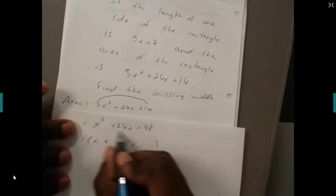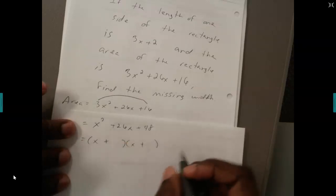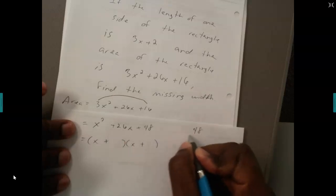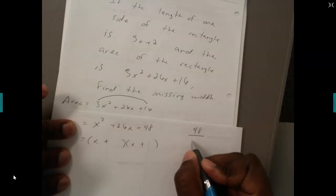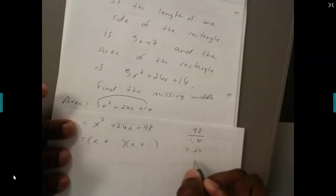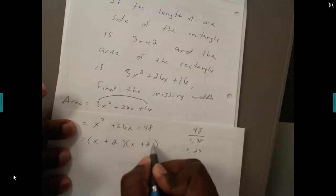I've got to figure out numbers that multiply to be 48 but add to be 26. You've got 1 and 48, 2 and 24, and actually I see the pair 2 and 24 can add up to 26, so we'll put 2 and then 24.